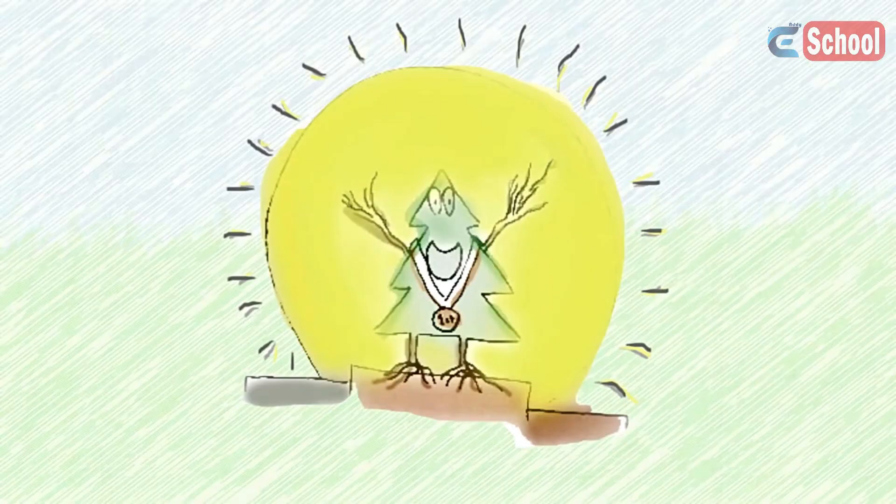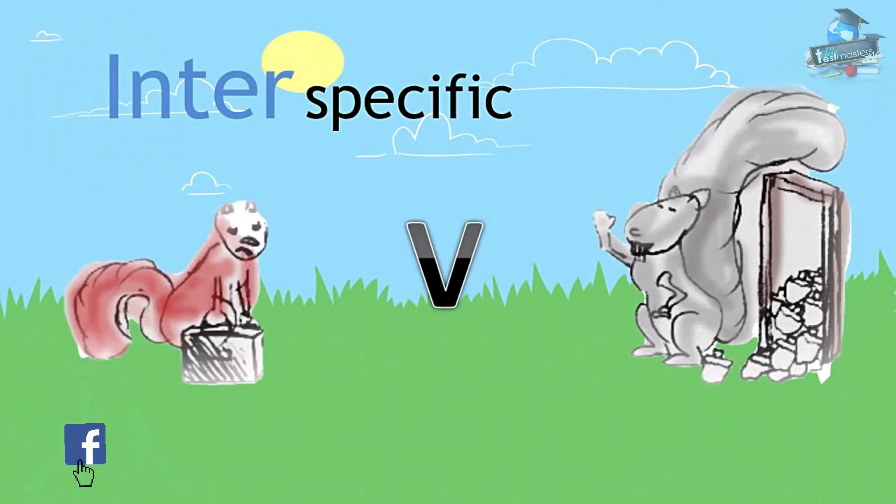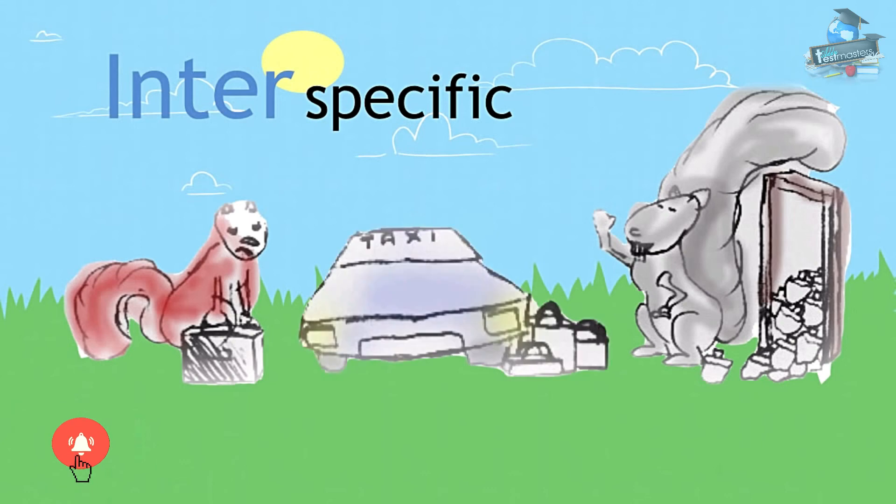Another example of interspecific interaction is that between the grey squirrel and the red squirrel, who compete over the same habitat. The more aggressive grey squirrel has over time pushed many red squirrel populations out of their habitats.